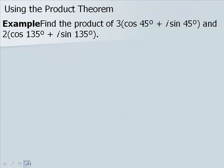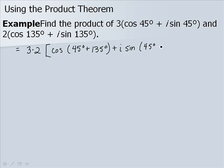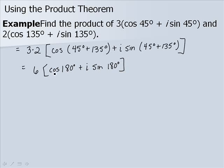Let's use the product theorem in the following example. We multiply our r values: 3 times 2. Then we take the cosine of the sum of our angles — 45 degrees plus 135 degrees — plus i sine of the sum of our angles. We get 6 times the quantity cosine of 180 degrees plus i sine of 180 degrees. Evaluating: cosine of 180 degrees is negative 1 and sine of 180 degrees is 0, so the imaginary part disappears. We have 6 times negative 1, which is negative 6.